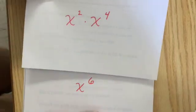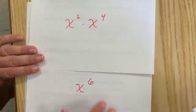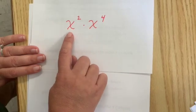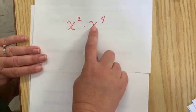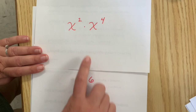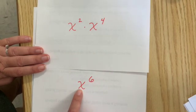So looking at it, we could almost skip that middle step. If I was to tell you to simplify x squared times x to the fourth, you would go right from there to the fact that there are six x's.